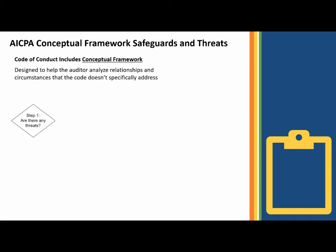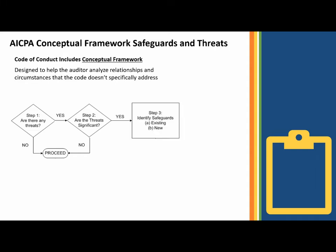Step one: are there any threats to your independence? If no, you can proceed. But if there is a threat, step two is determining whether it's a significant threat or not. If it's not significant, you can proceed. But if it does seem to be a significant threat, then you've got to look for safeguards — whether existing or new. Then in step four, you decide whether those safeguards result in an acceptable risk. If yes, you can proceed with the work; if no, do not proceed.